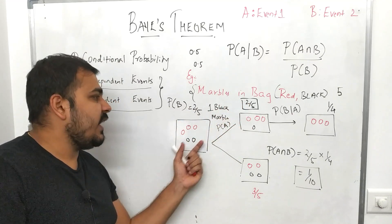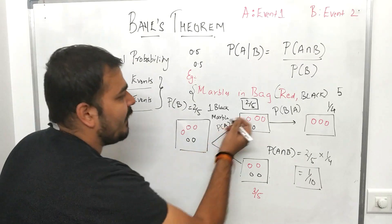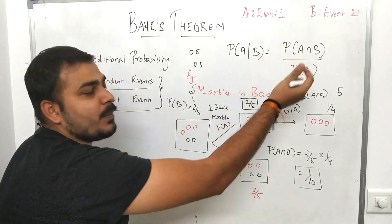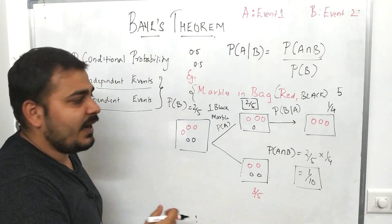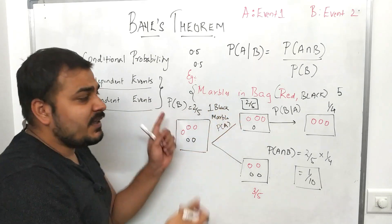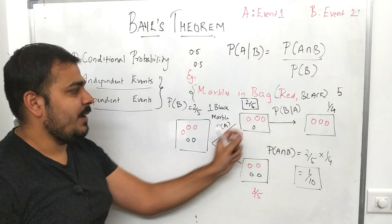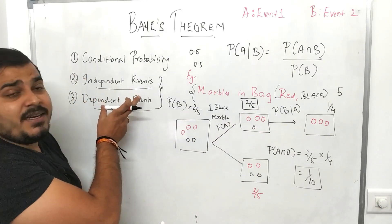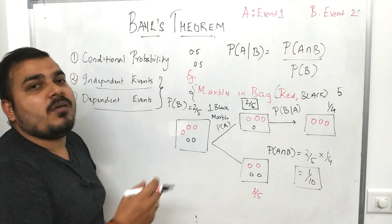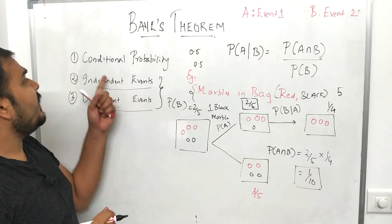In the next event, if I want to pick up one more marble, one black marble has already been removed, so now there are only four marbles remaining. If I try to pick up one more black marble, the probability will be one by four. The probability keeps changing because the number of marbles is decreasing — this is an example of dependent events.